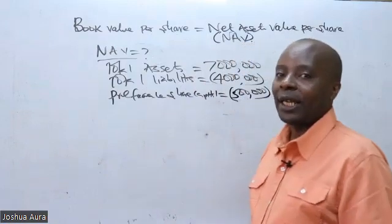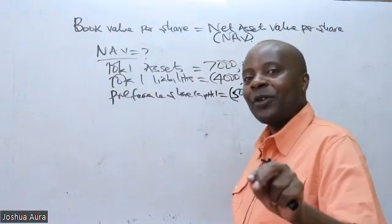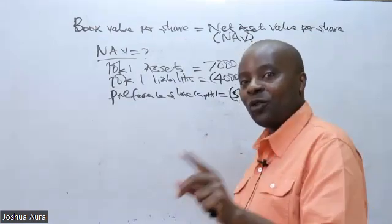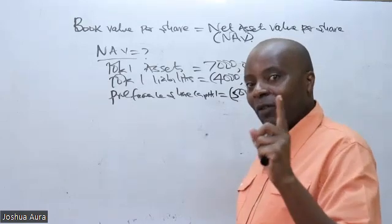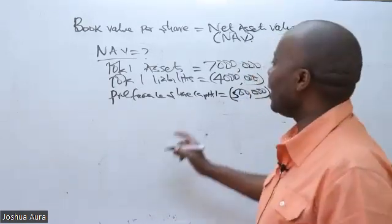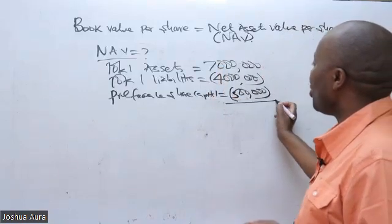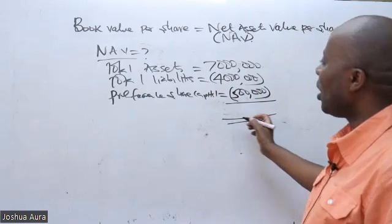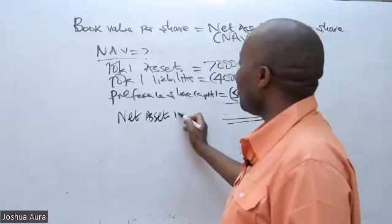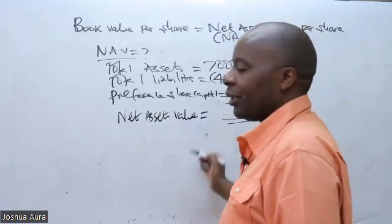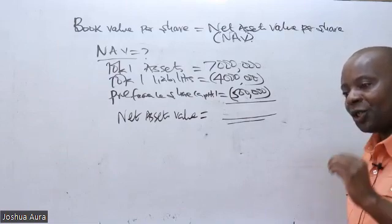Remember, preference share capital has been categorized as a liability, because at the end of the day, preference shareholders — you must pay them back their money with a fixed return. So take the 7 million, subtract these two elements — the 4 million liabilities and 500,000 preference share capital — and you arrive at what I will call the net assets value, or the book value. They want me to give them the book value per share.